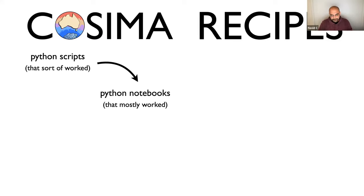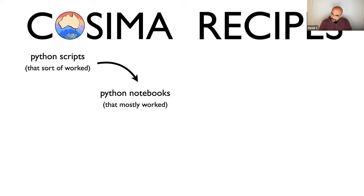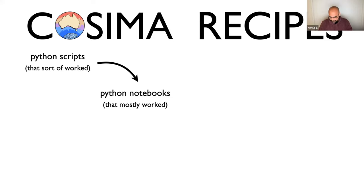At some point we decided to convert all those scripts into Jupyter notebooks with more description, some plots — the modern way of doing things. That was a good move, and we relocated everything into a new separate repository we called COSIMA Recipes.